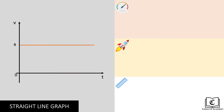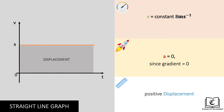Next, in this graph, we see that this object is traveling at a constant speed of 8 meters per second. There is no acceleration on this object since the gradient is zero. Displacement of this object is positive since the area under the graph is positive.